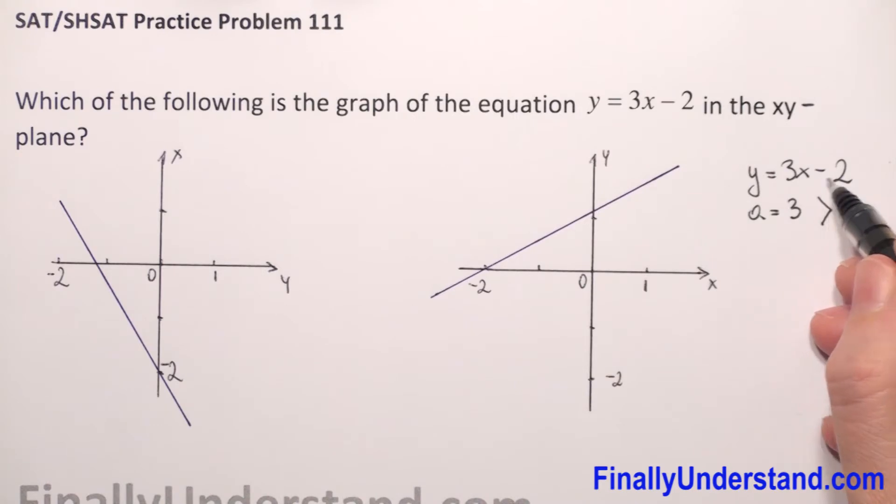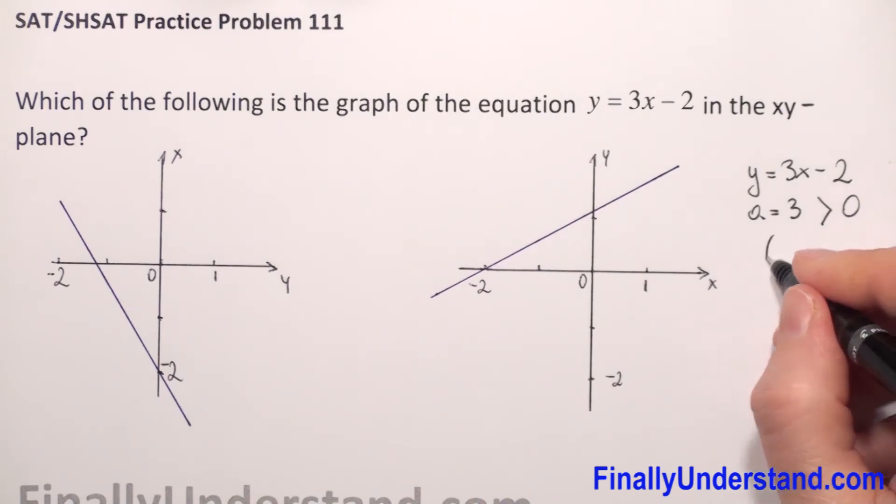What else? We have minus 2. It means that our function intercepts the y-axis at point 0, negative 2.